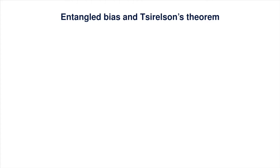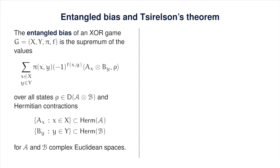Suppose we have an XOR game G, defined by question sets X and Y, a probability vector pi, and a function f that indicates whether Alice and Bob's answers should agree or disagree for each input pair. The entangled bias of G is the supremum of the values given by the formula here, taken over all states rho and Hermitian contractions A_X and B_Y for all questions X and Y. The scripted letters A and B denote arbitrary complex Euclidean spaces representing the parts of the state rho held by Alice and Bob respectively.